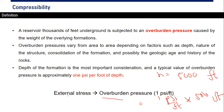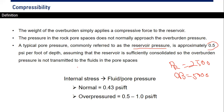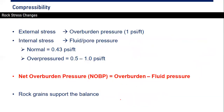To summarize: the external stress from overburden pressure has a gradient of 1 psi per foot. The internal stress from fluid or pore pressure has a normal gradient of 0.43 psi per foot. If you have an overpressured reservoir, the pore pressure gradient is 0.5 to 1 psi per foot.